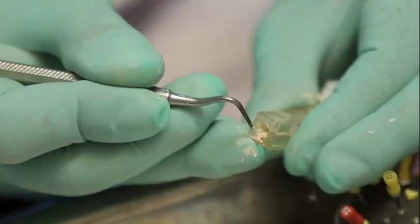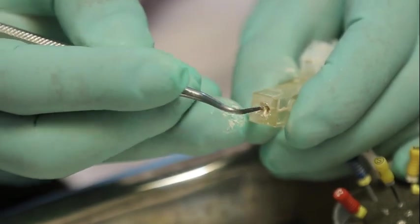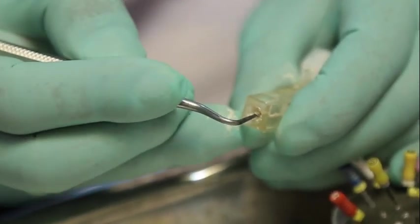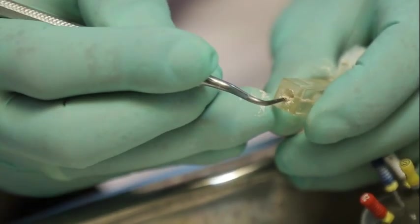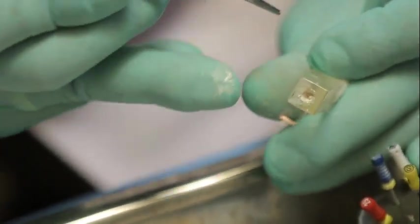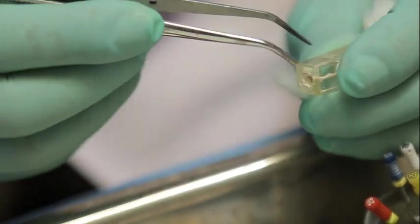Now remove the excess GP. You can clean the chamber using citric acid or alcohol if you want. It is better to remove all sealer from the chamber before giving access restoration.